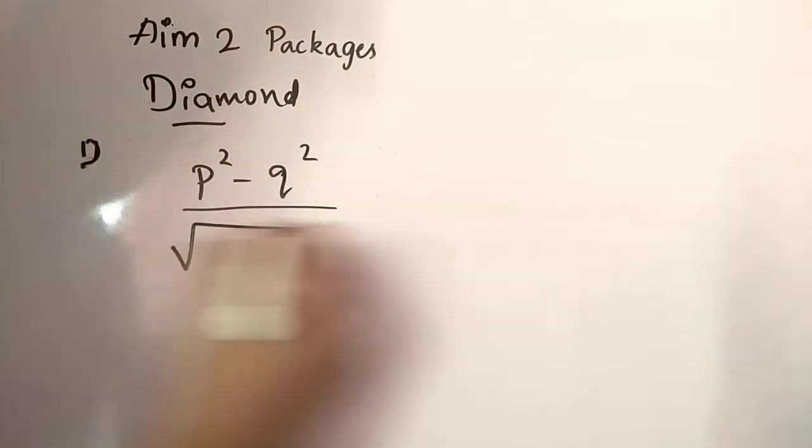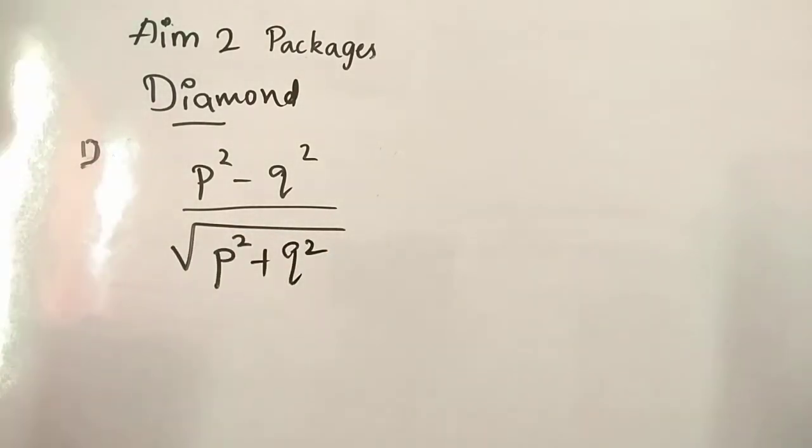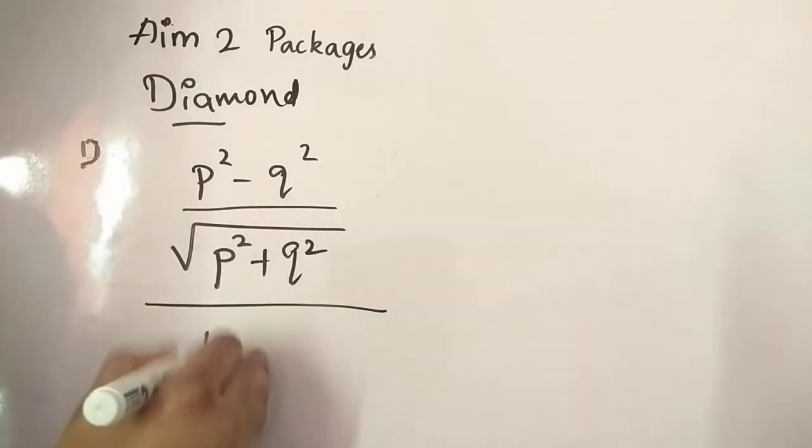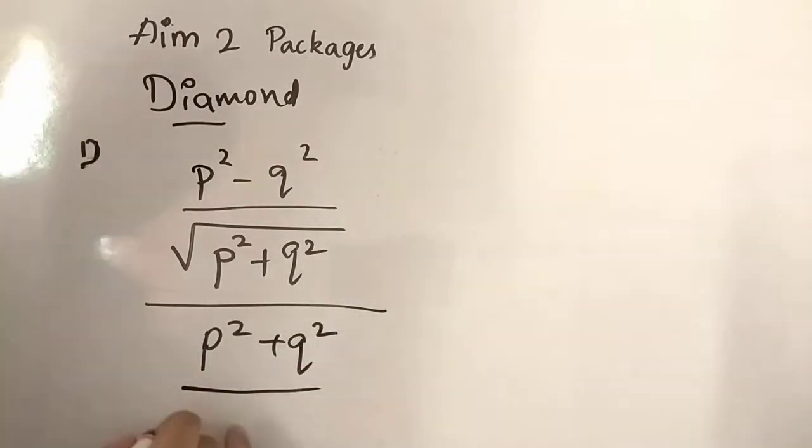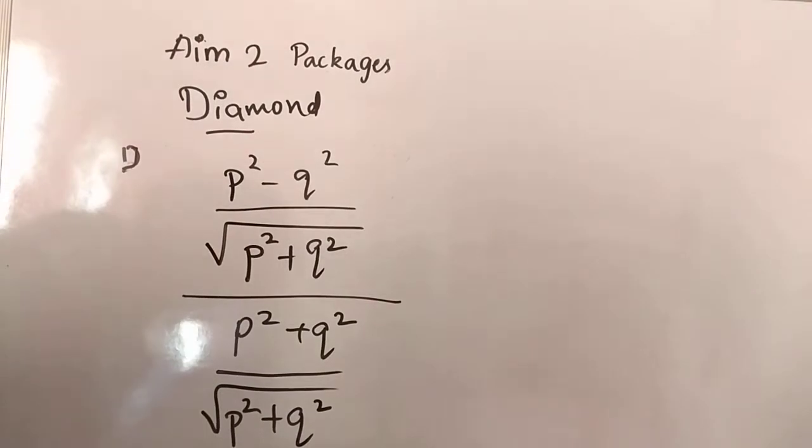square root of P square minus, sorry, Q plus Q square, divided by P square plus P square plus root over P square plus Q square. Okay, so in such a way, we completed this.